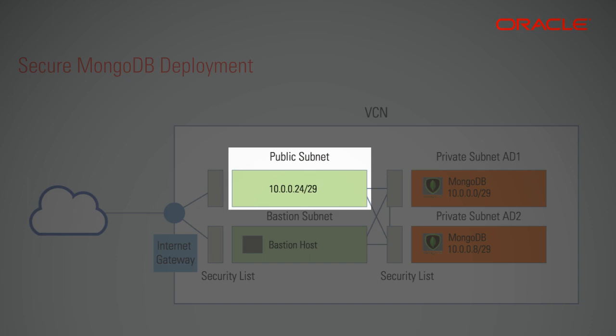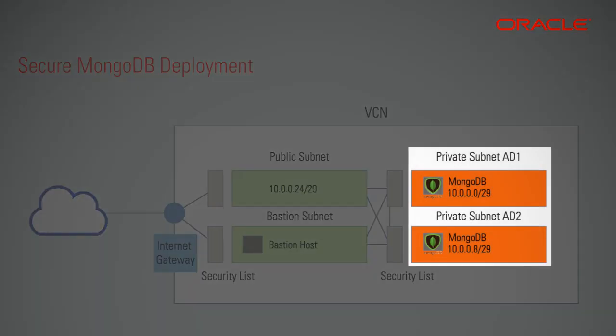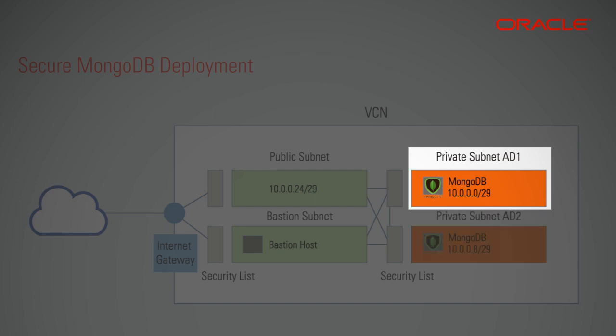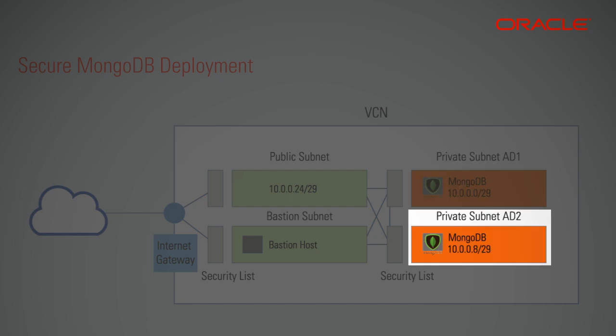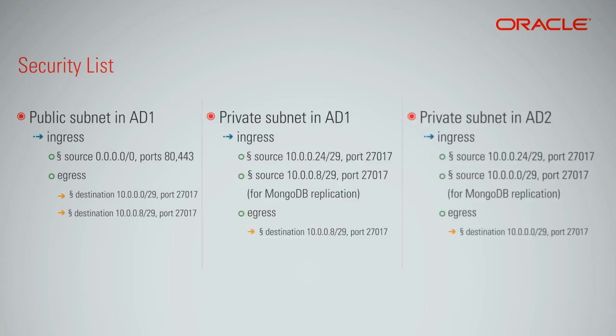The public subnet is 10.0.0.0/29. The applications in the public subnet only listen on ports 80 and 443. Your MongoDB is replicated across two availability domains — one private subnet per AD. Private subnet in AD1 is 10.0.0.0/29, for example, and private subnet in AD2 is 10.0.0.8/29. MongoDB is listening on the default port of 27017.